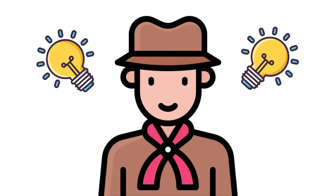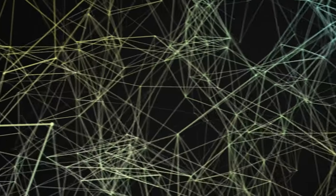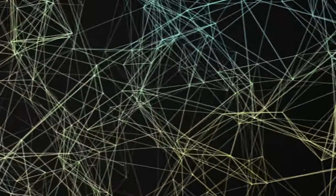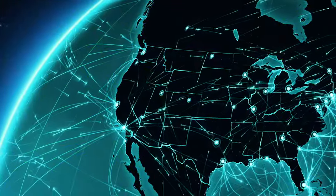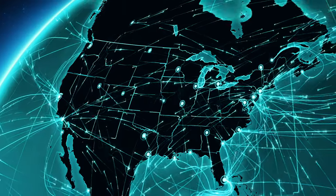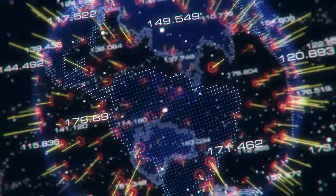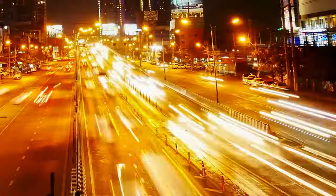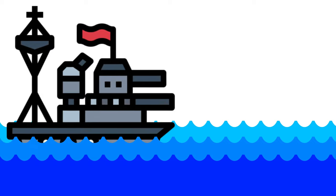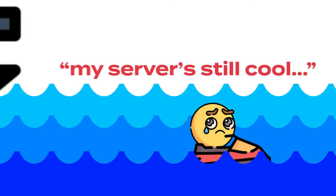There are two things you can do to prepare. One is knowing your network's traffic — understand your typical volume and scout out suspicious traffic coming from random IPs. Two is taking advantage of cloud platforms to load balance your traffic, since a large data center is going to handle this far better than your own server.